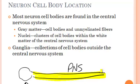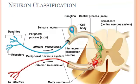Then we have things called ganglia. Ganglia are where we have collections of cell bodies outside the central nervous system. Most cell bodies are found in the CNS, but sometimes we get these collections of cell bodies outside the central nervous system — they form these little bumps called ganglia. For example, here's our spinal cord, which is part of the central nervous system. Notice on the inside here we have some gray matter.